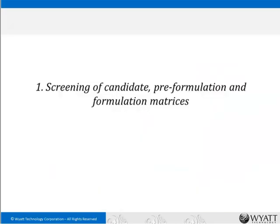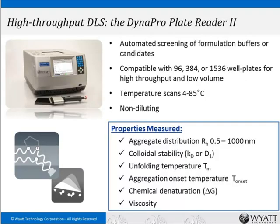Getting back to formulations: our first challenge is screening formulation matrices, or perhaps pre-formulation space, or even looking at various candidates to determine which are most developable. The most powerful tool for this type of measurement is probably high-throughput dynamic light scattering. As I'll show you in the course of this webinar, there are many properties indicating degradation and propensity for degradation that you can determine with this instrument in the high-throughput screening mode.